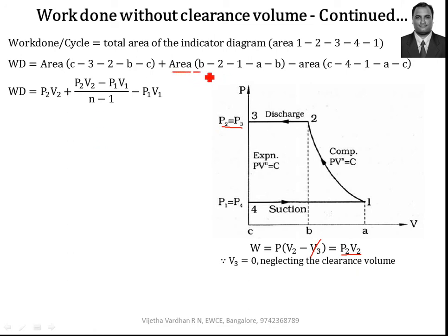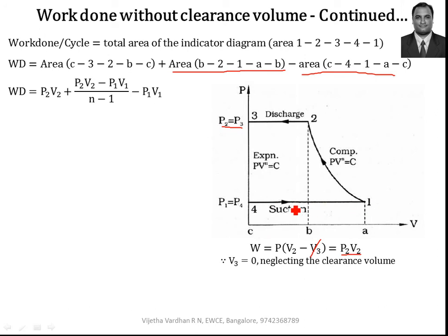The area under A21B, which follows the polytropic process, gives the work done as (P2·V2 − P1·V1) / (N − 1). The remaining area under C41AC follows a constant pressure process, and similarly the work done is P × (V1 − V4). Since we consider V4 equal to zero, this becomes P1·V1.